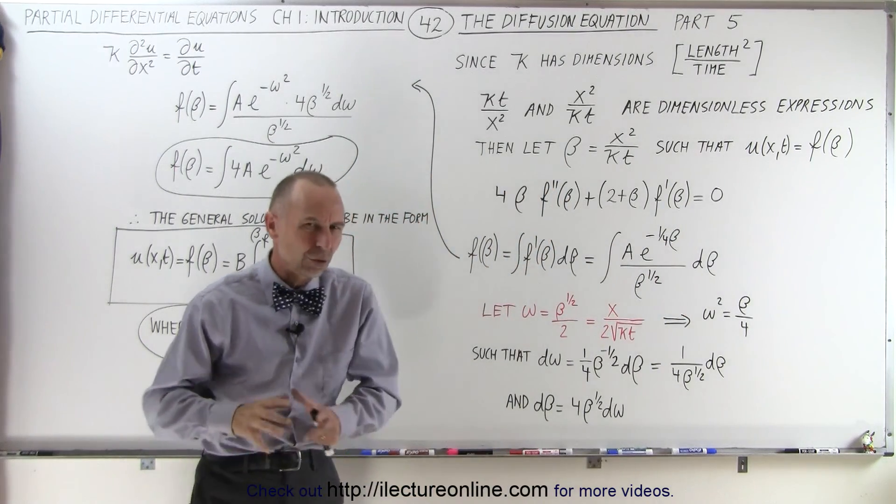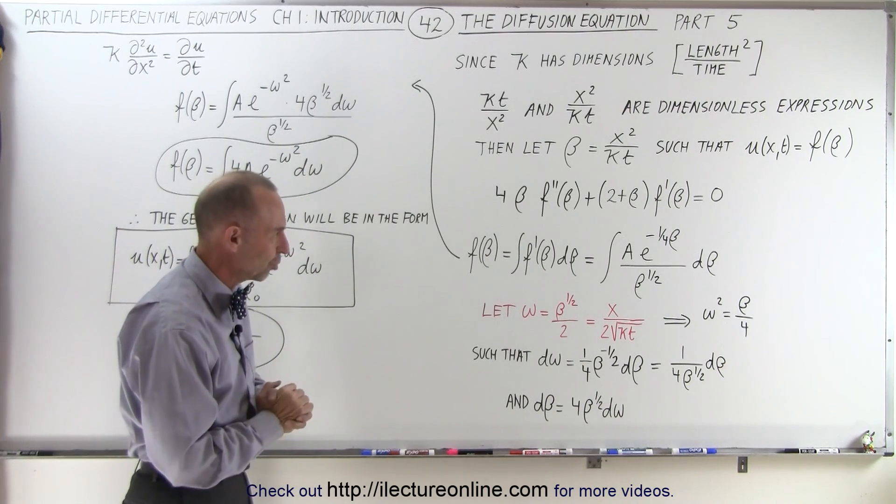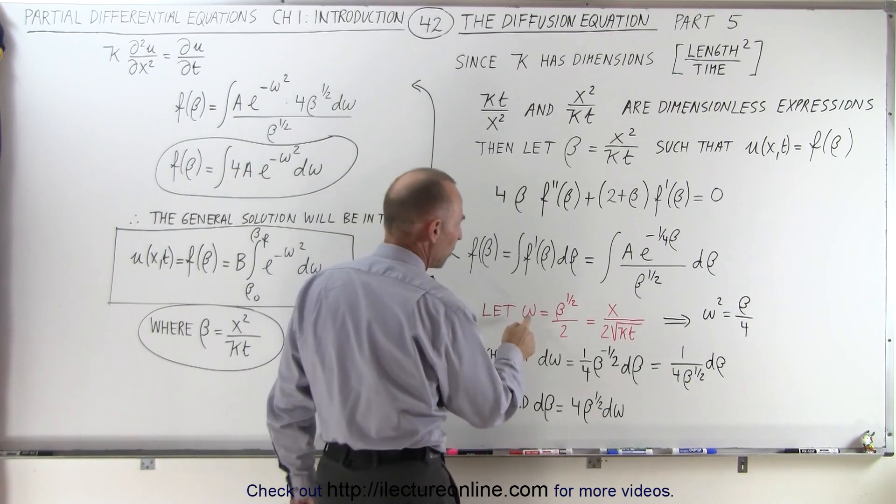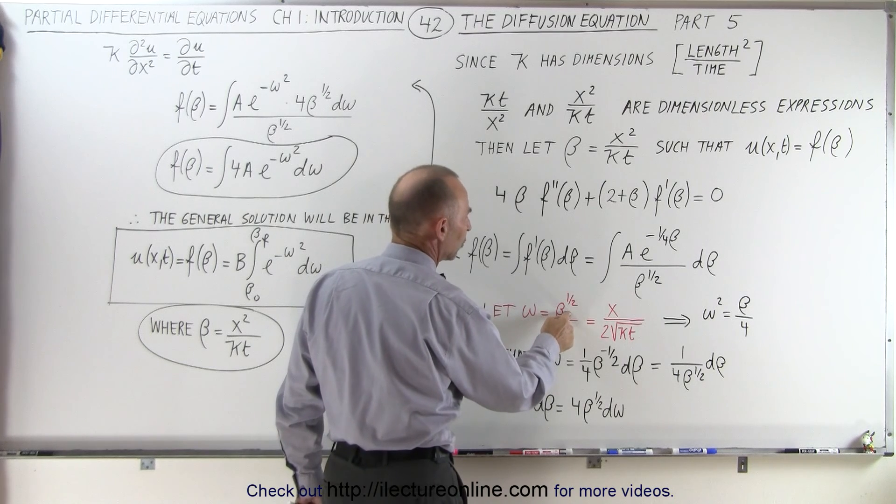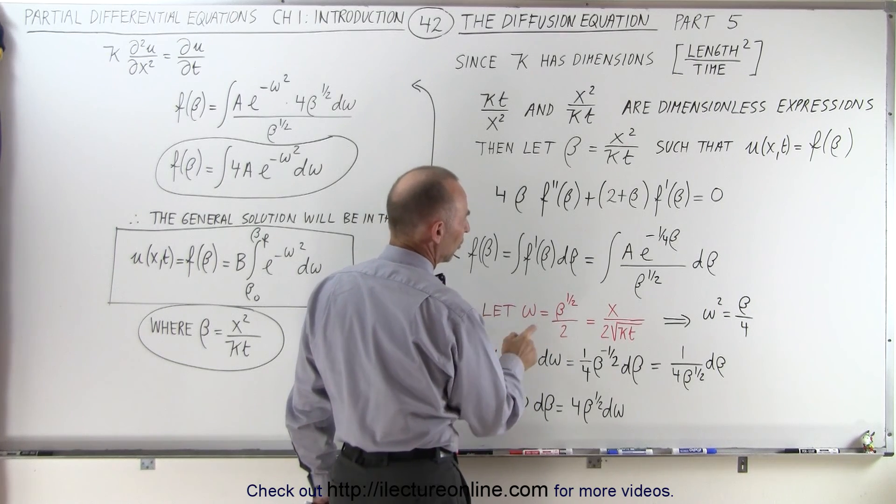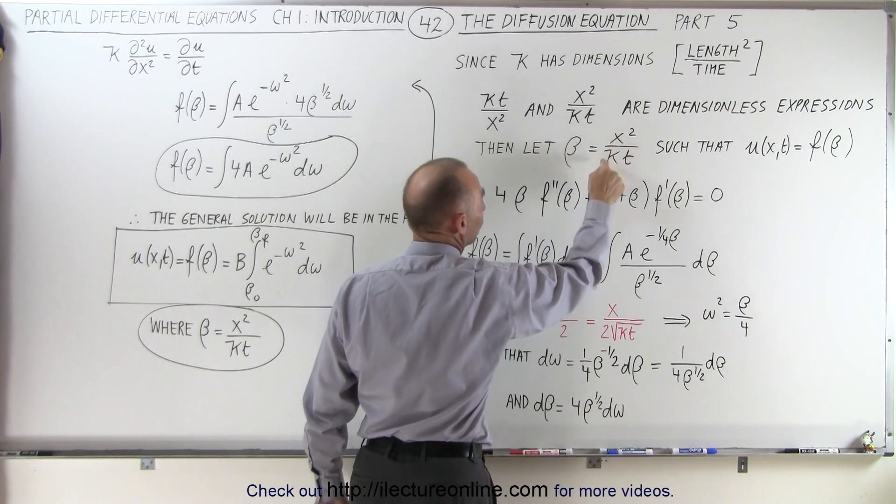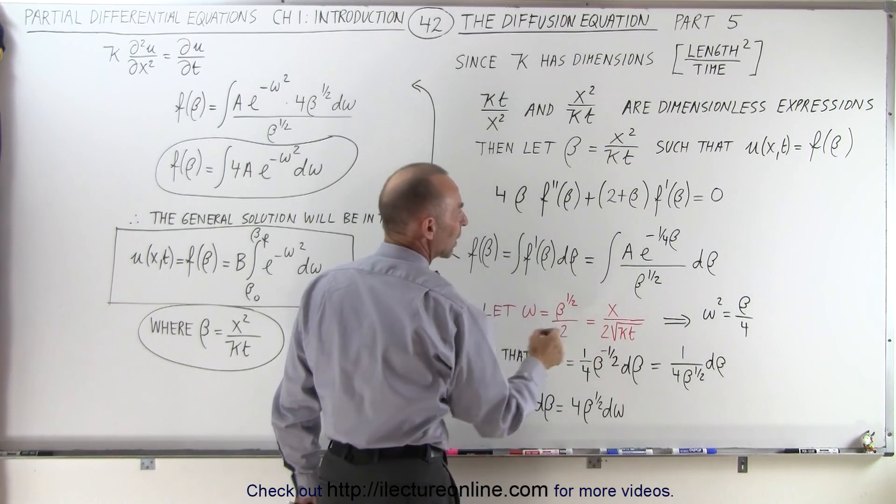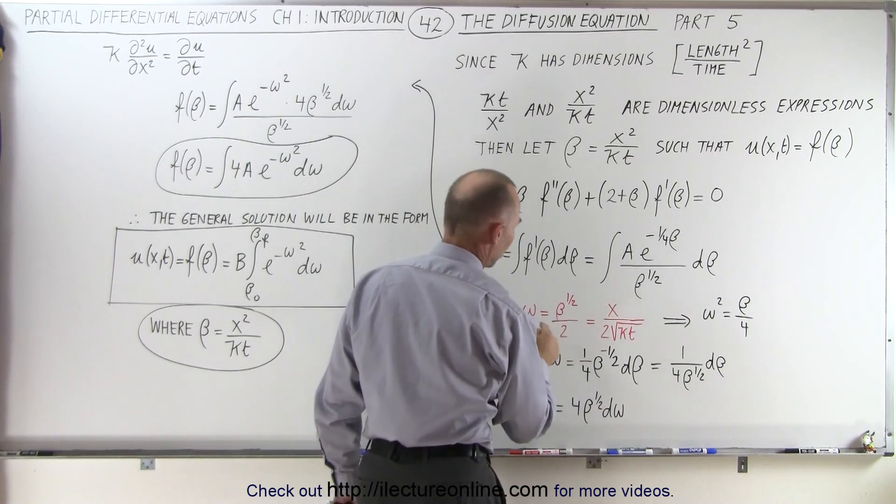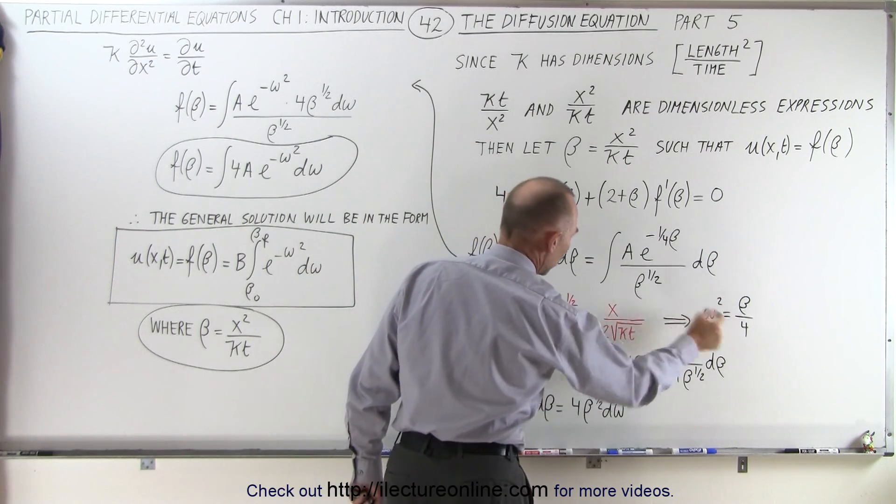Then we realized we couldn't solve that integral, so we had to make another substitution. The substitution is going to be omega equals beta to the one half over two, such that if we replace beta to the one half, that would be x over the square root of kt. We still have the one half, and if we square both sides, omega squared would be beta over four.